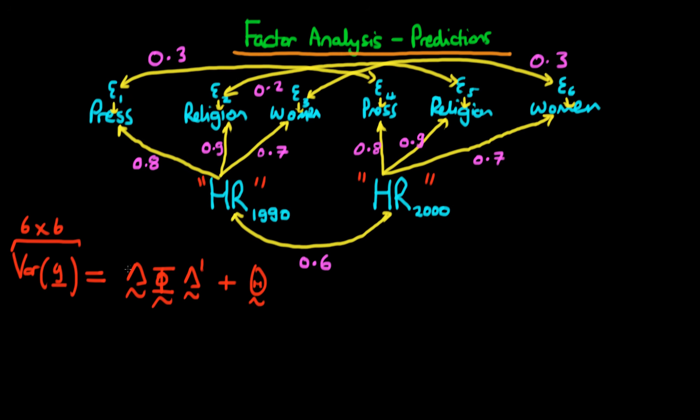So it's probably worth just stressing what each of these terms actually means. This first term here on the left represents the variance of the indicators, which is due to the common factors. So because of that, we often refer to this as the common variance or communality.